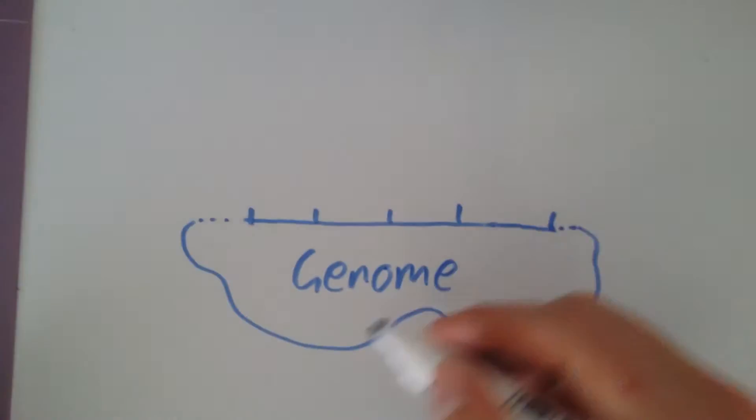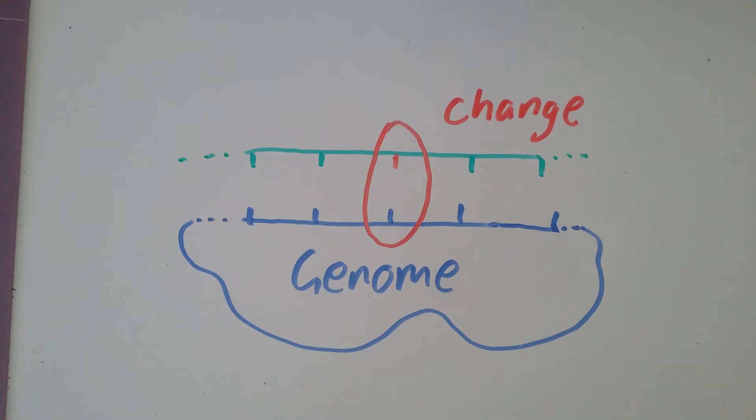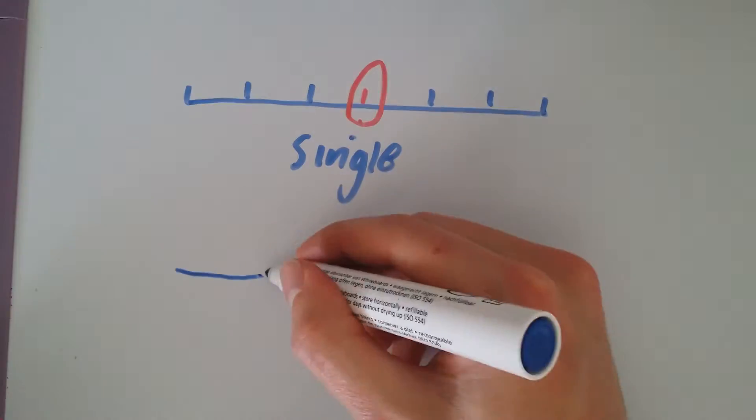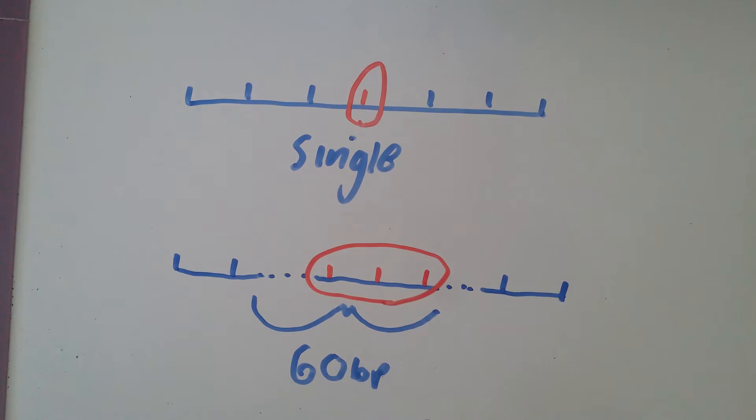In the middle of these oligos, you can incorporate the changes that you want to make to the genome. These changes can be single nucleotide or up to 60 base pairs in a row, although efficiency drops off after 20 base pairs.